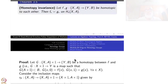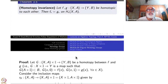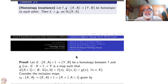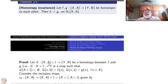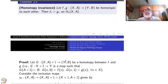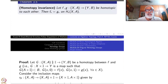We will go partway in proving this but will not complete the proof. Start with G, a homotopy from (X,A) × I to (Y,B) — meaning a map from X × I to Y such that A × I maps inside B. Suppose this is a homotopy between f and g. Consider the inclusion map η_t from (X,A) to (X,A) × I, defined by η_t(x) = (x, t).